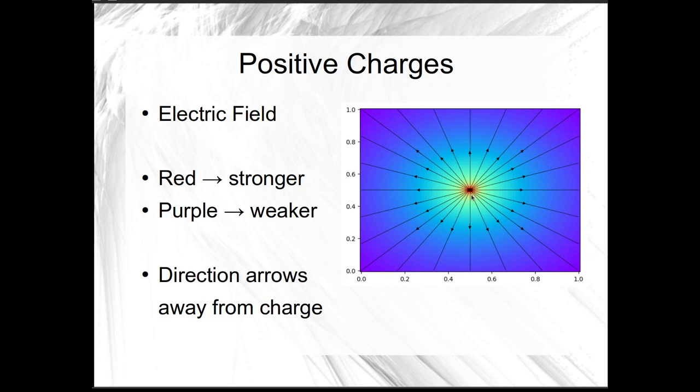Direction is shown by the arrows. For a single positive charge, it's a nice uniform field. It might be a little hard to see on the video depending on your screen size, but the arrows are all pointing away from that positive point charge.